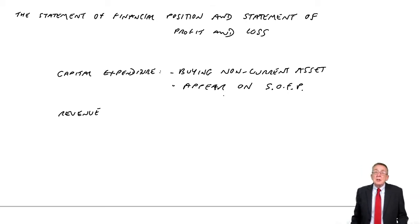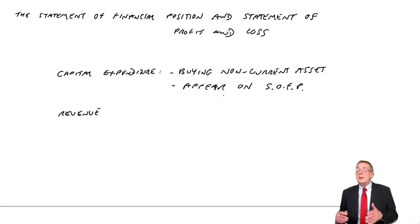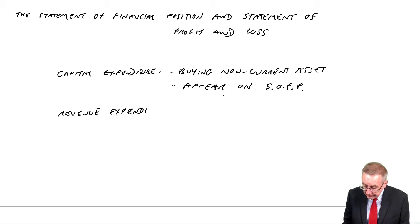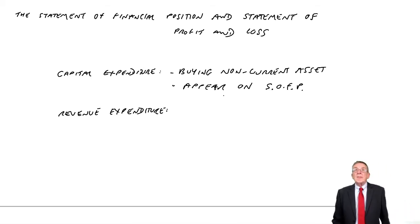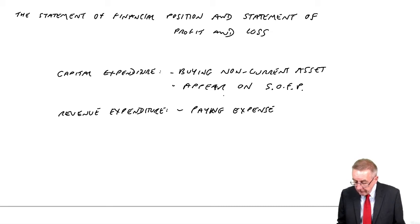Now that's capital expenditure, and nothing to do with the word capital itself. Capital is money owed to the owner. Capital expenditure is when you're buying a non-current asset. On the other hand, revenue expenditure. Again, expenditure, we're spending money. But revenue expenditure is when you're paying expenses.